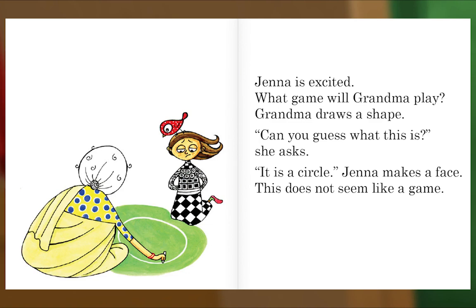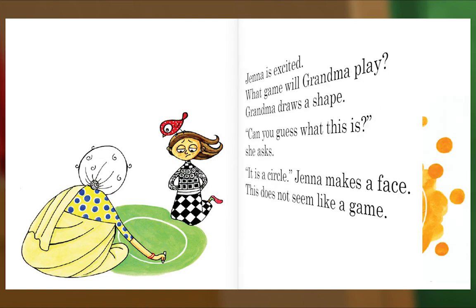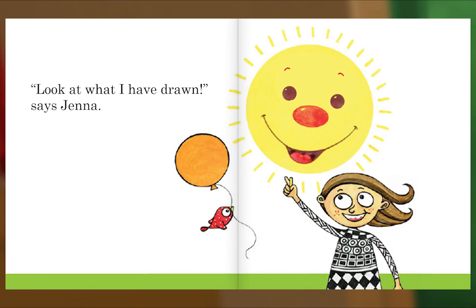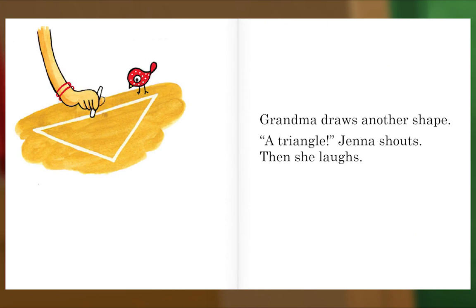Jenna makes a face. This does not seem like a game. 'Yes, but it is also something more,' says grandma. Jenna thinks, then she smiles. 'It is a smiley face!' Jenna says. Grandma claps. 'You understand the game!' Look at what I have drawn, says Jenna. Grandma draws another shape. 'A triangle!' Jenna shouts. Then she laughs.